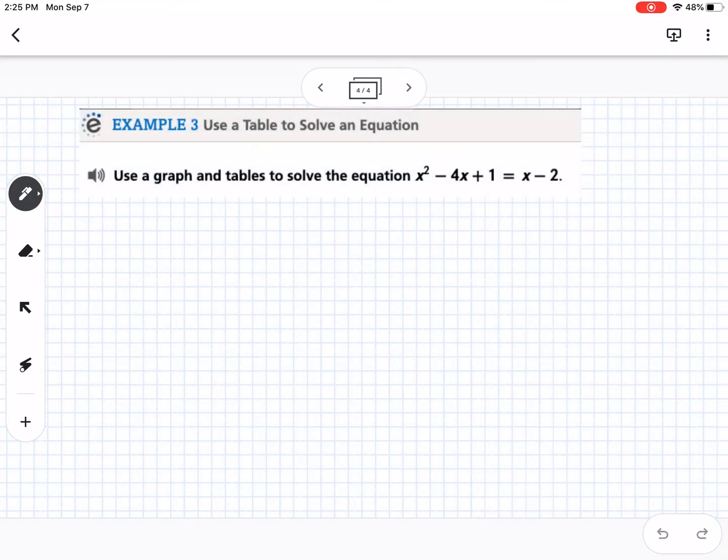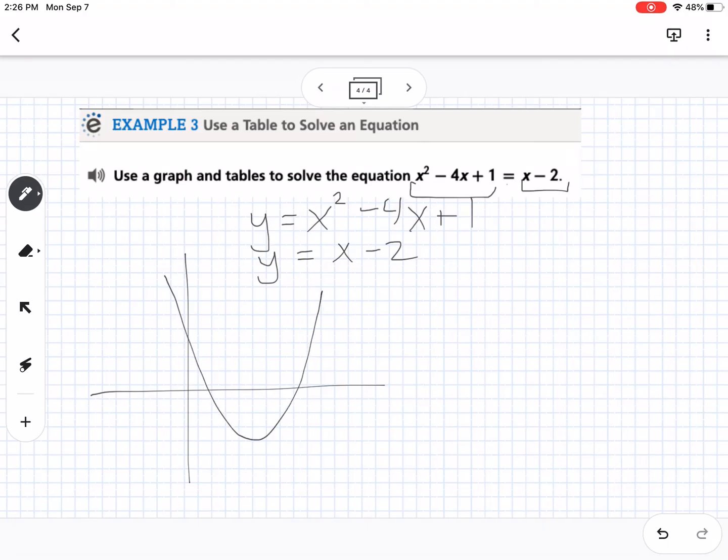Then our last example says to use a graph and tables to solve this equation. So, basically, I want to talk you through if you're using a graphing calculator or the Calculate84 app or how you would do this, like, if we were in class and we all had the graphing calculators. So, the first thing is, again, we would put this in as y equals x squared minus 4x plus 1 and y equals x minus 2. So, we break it up into those two equations. So, I'm just going to sketch this. You would get a parabola and a line.